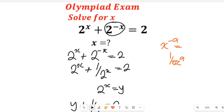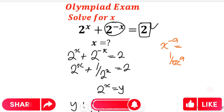Now I want to give you a task: take the value of x equal to 0, substitute it into the initial equation, and find out if the solution gives us 2. If it does, that means x equals 0 is the answer that satisfies this exponential equation. Don't forget to like this video, share it with your friends and colleagues, and subscribe to our channel for more simplified mathematics solutions. Thanks so much for watching, bye-bye for now.